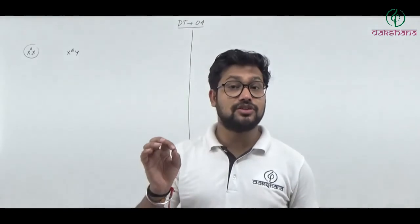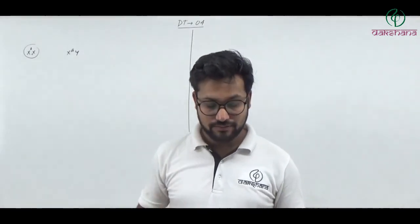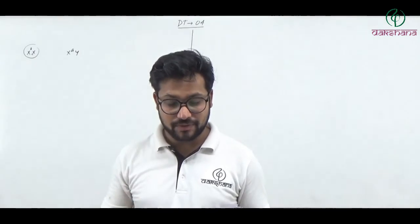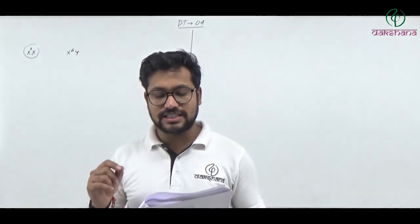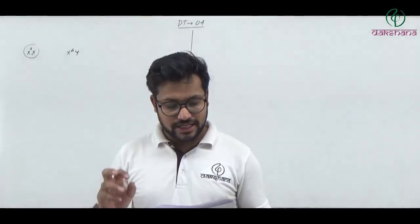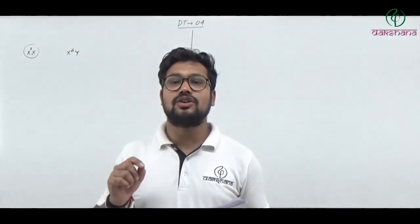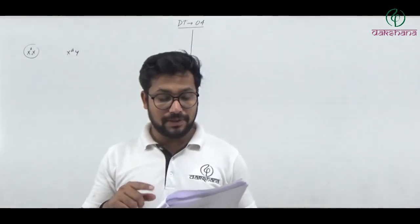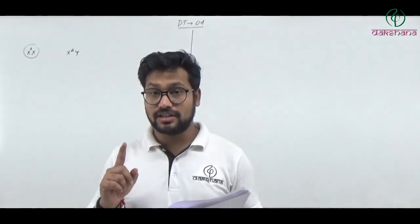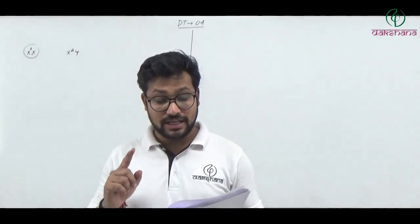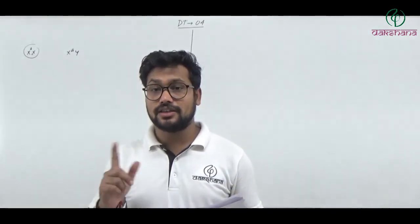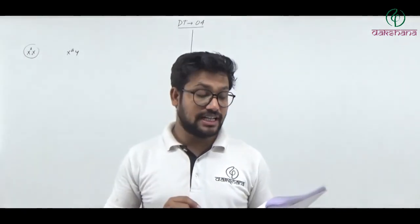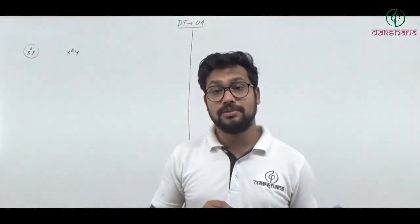Question number seventy-nine: Which set of structures is ectodermal in origin? The answer is epidermis, brain, and retina — all three are ectodermal in origin. Question number seventy-nine's third option is the right answer.